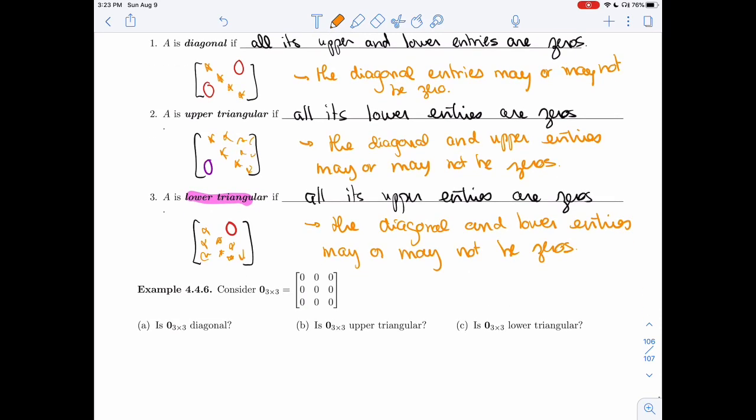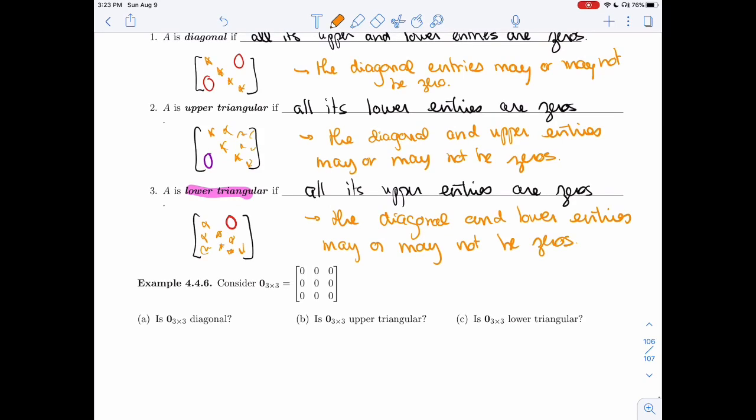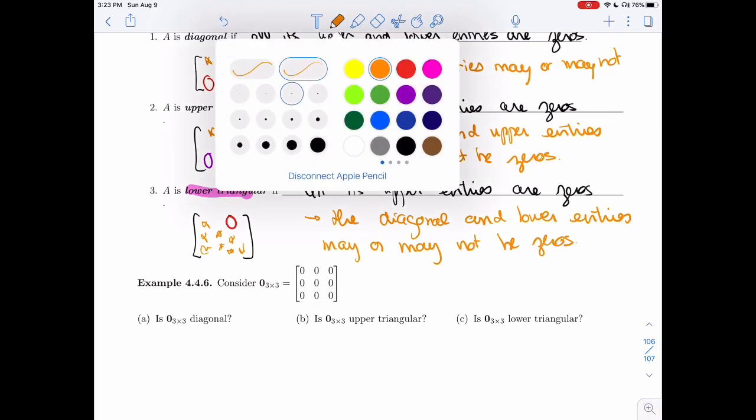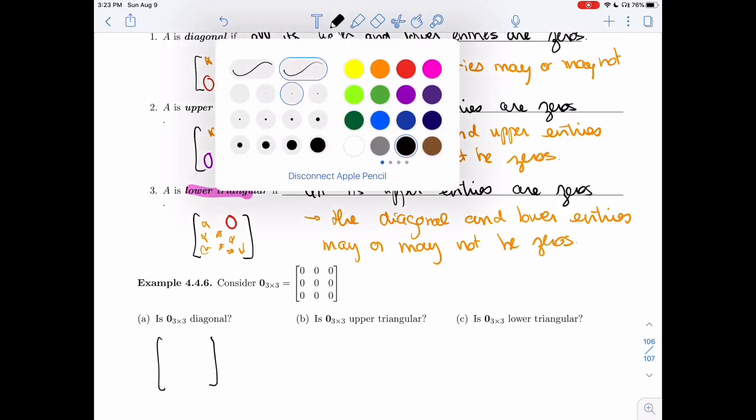All right, so let's look at an example here. I have the 3 by 3 zero matrix. I want to know if it is diagonal. Well, it's diagonal if everything above and below are 0.